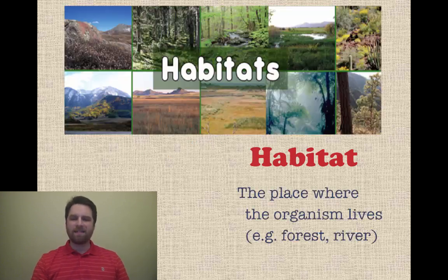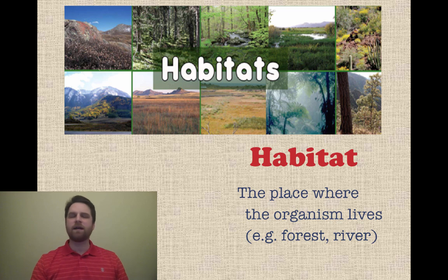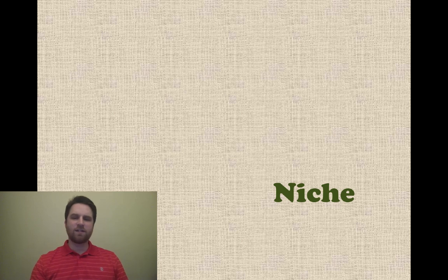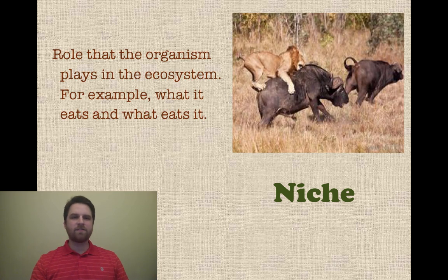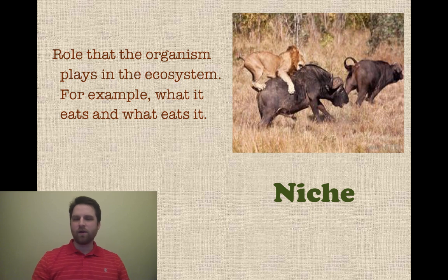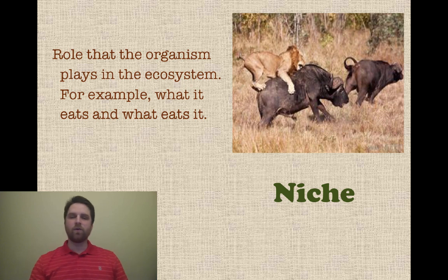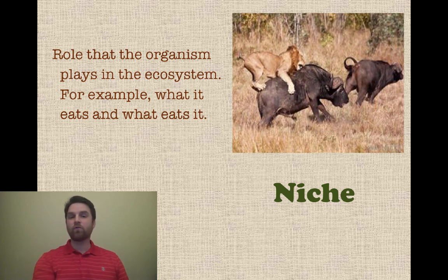First, habitat. The habitat is the place where the organism lives, something near a river or in a forest. There are pictures of habitats for you. This is very different from what people confuse it with, which is a niche — the role that the organism plays within its ecosystem. For example, what the organism eats and what eats it. So we need to understand the difference between the habitat where it lives and the niche, which is its role in that habitat.